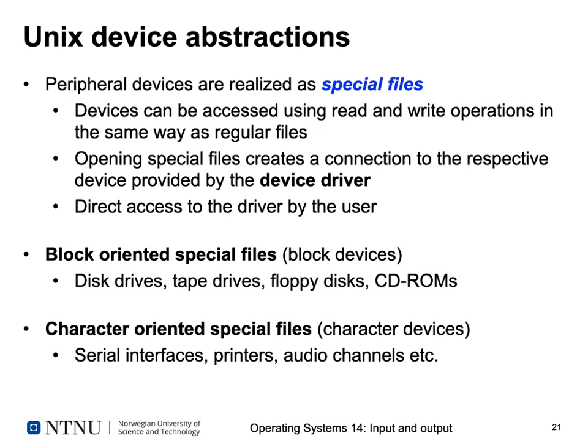The first sort is block-oriented special files, or block devices, which include disk drives, tape drives, floppy disks, CD-ROMs, and so on — everything that reads data in larger chunks of, for example, 512 bytes. We also have character-oriented special files, or character devices, which include serial interface lines, printers, and also audio channels for a sound card.